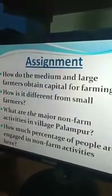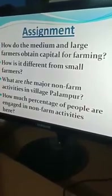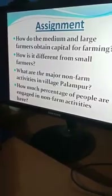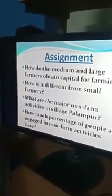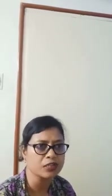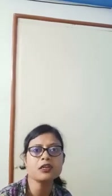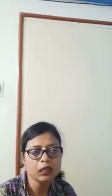Assignment for students: How do medium and large farmers obtain capital for farming? By selling their surplus production in the market — whatever surplus they produce this year, they sell it, get the profit, and keep it as capital for the next year's farming. How is this different from small farmers? Small farmers have very small plots of land, so they cannot manage surplus production. Whatever they produce is used for their own consumption. Every year they have to borrow from landlords, large farmers, traders, or money lenders. Their condition is becoming worse day by day because they cannot repay the money and get trapped in debt.